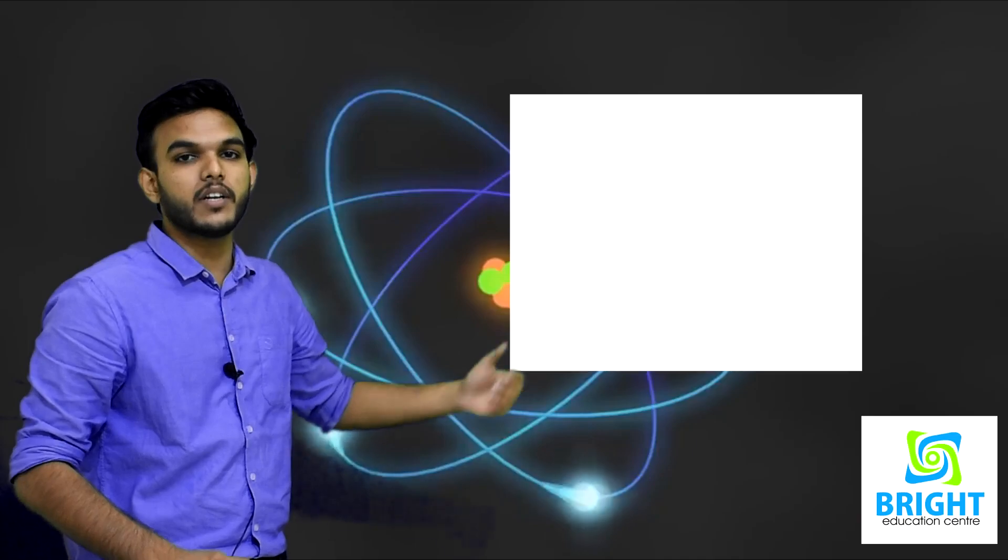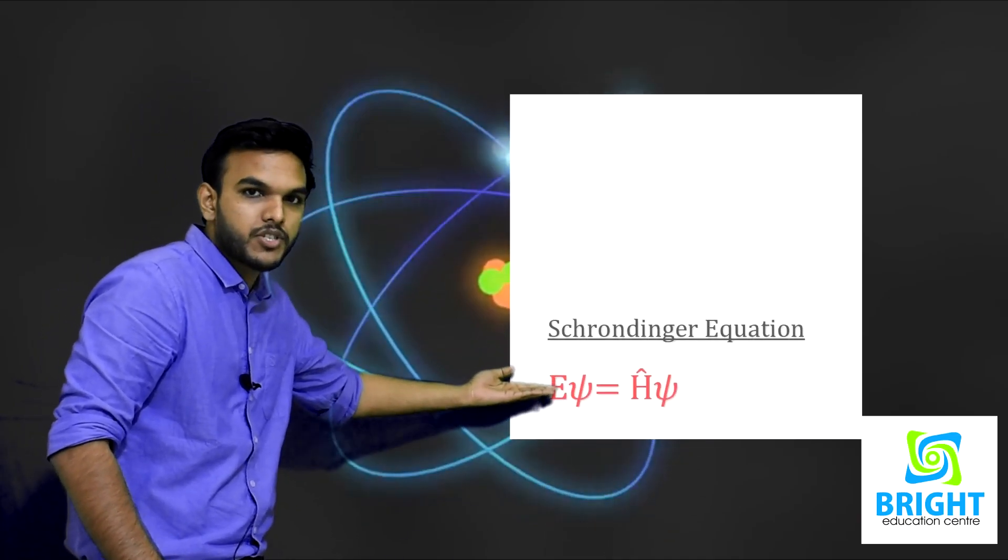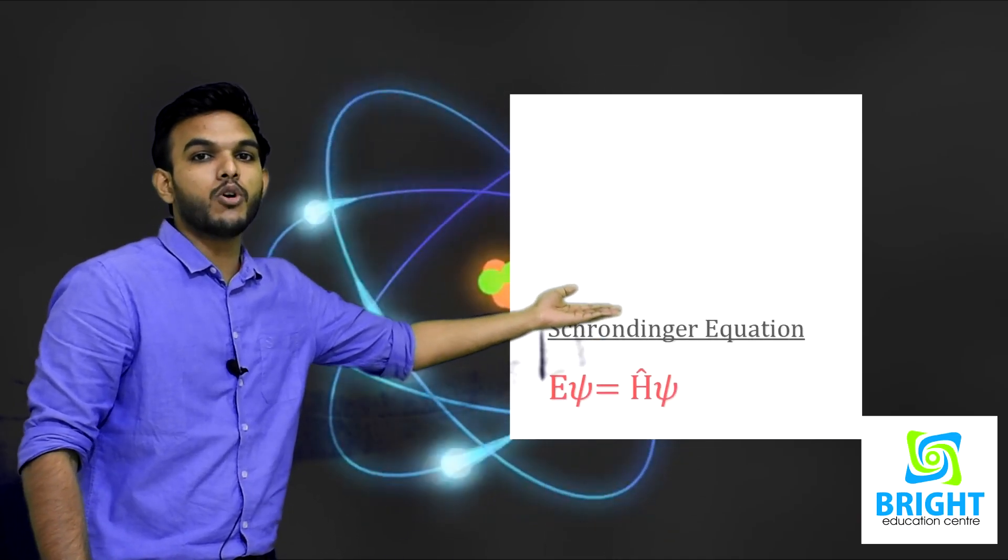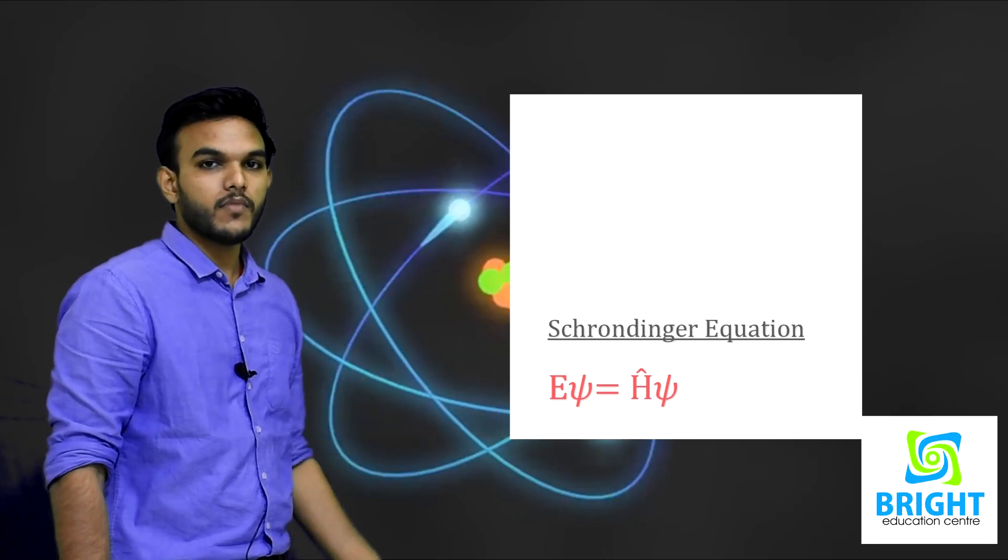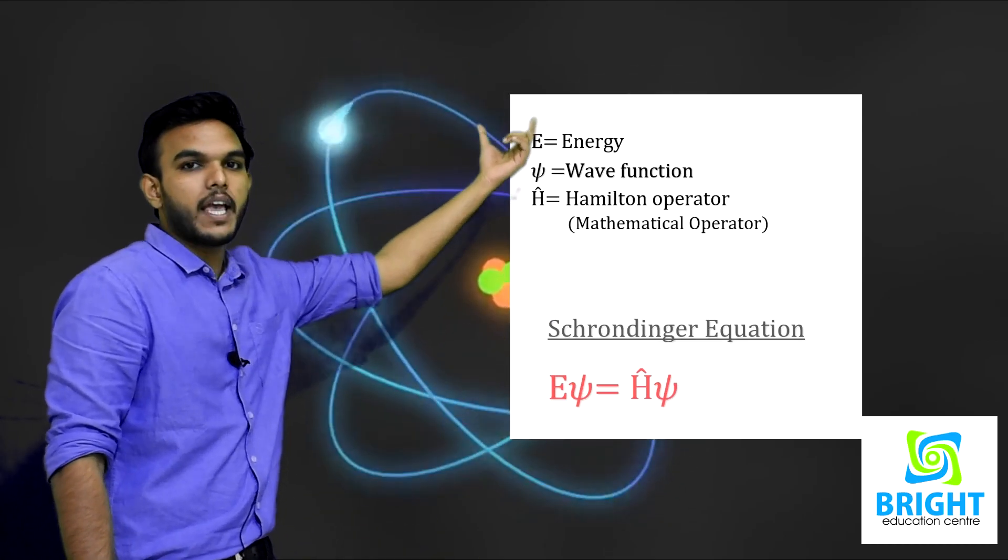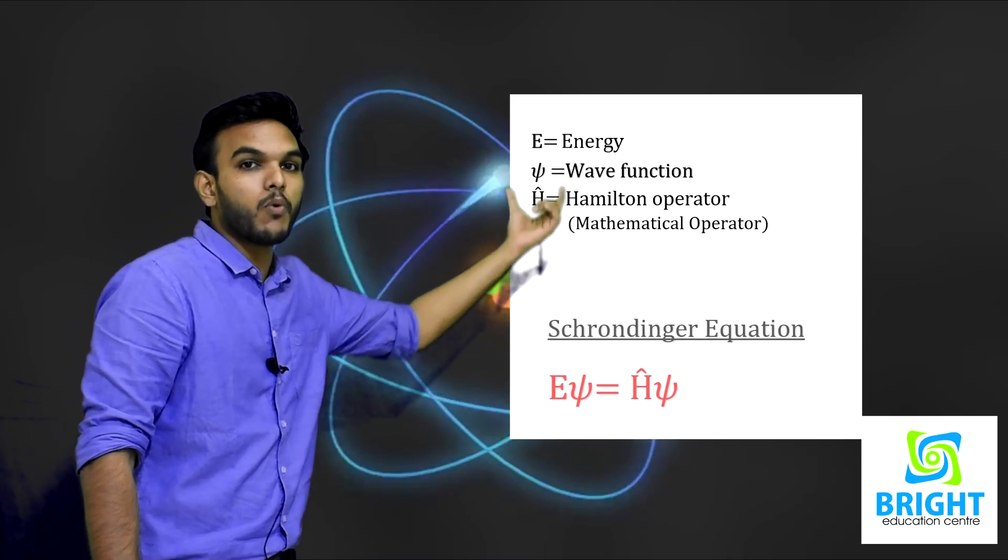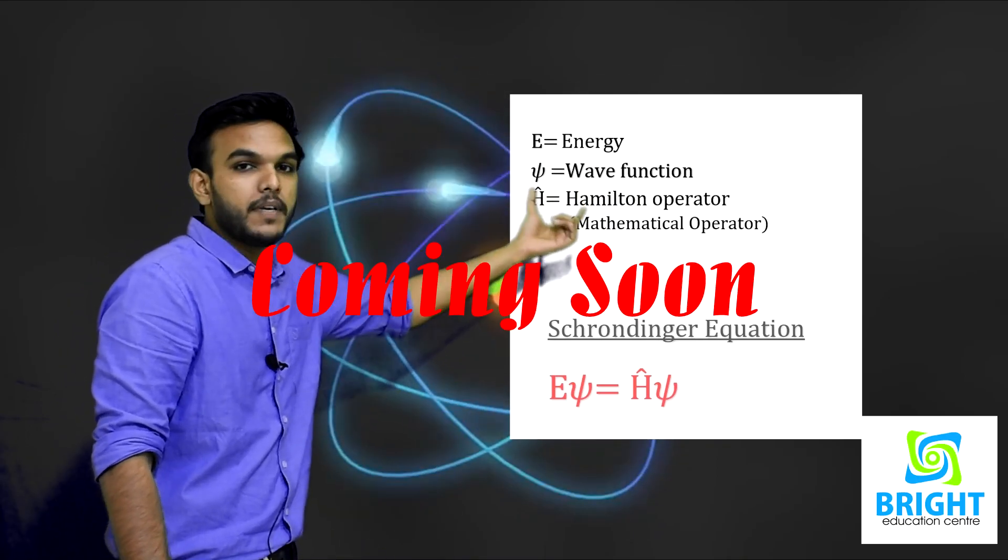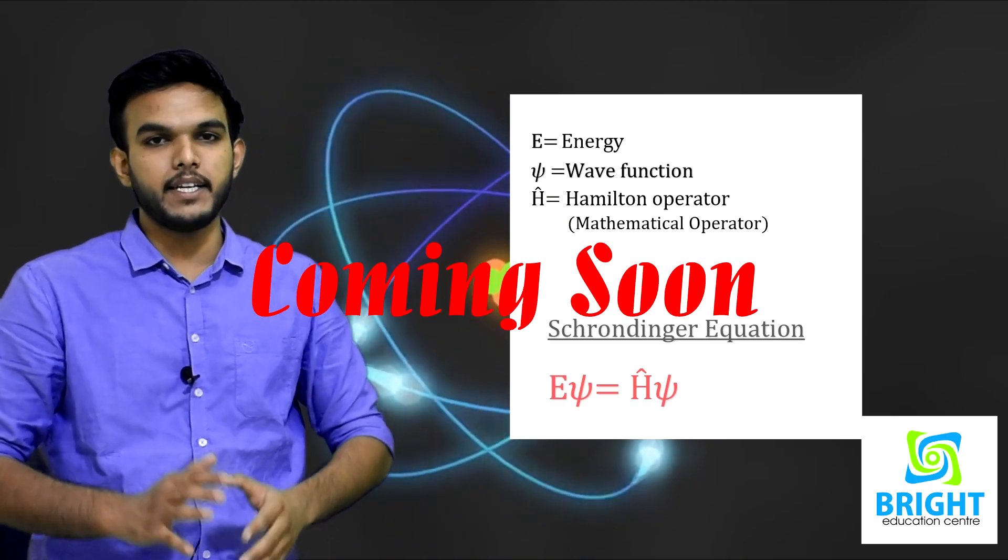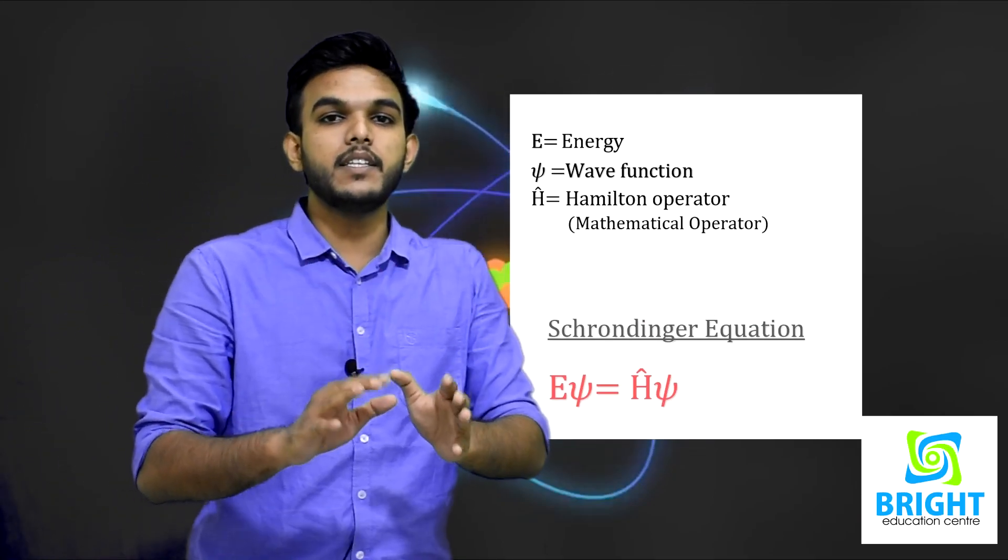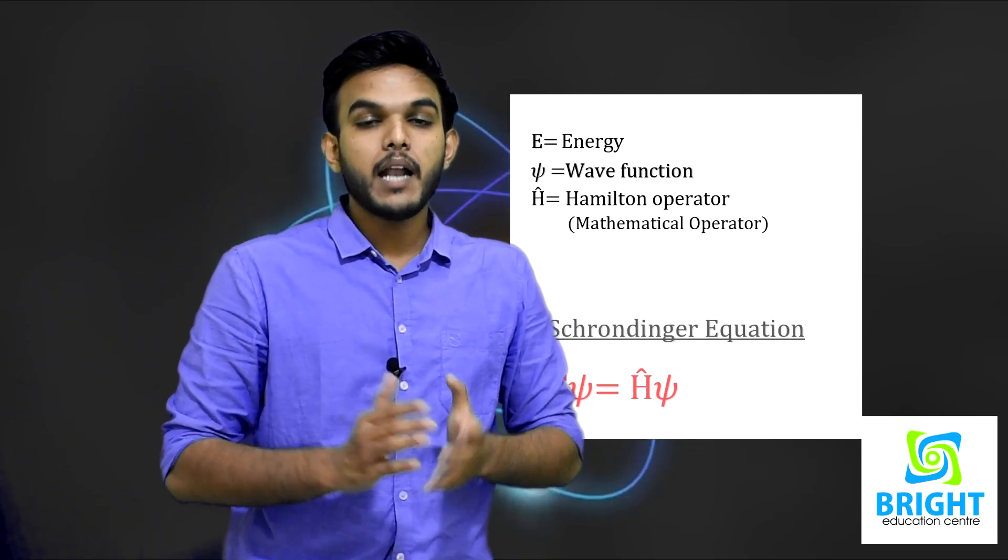The Schrodinger equation is Eψ = Ĥψ, where E is energy, ψ is a wave function, and Ĥ is the Hamilton operator. From that we get the energy value.